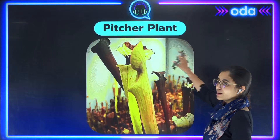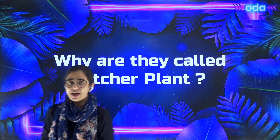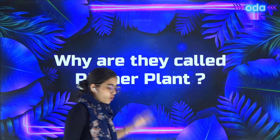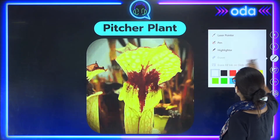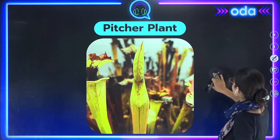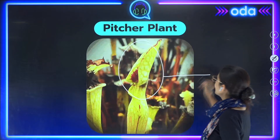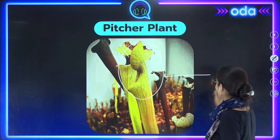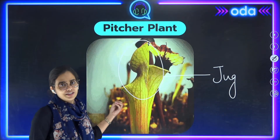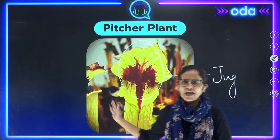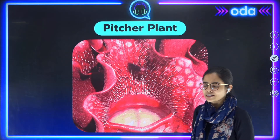So you can see that's the pitcher plant. Now, why are they called the pitcher plant? Any idea about it? They are called the pitcher plant because if you observe the shape of this plant — the pitcher, in very simple English, means a jug. So the shape of this pitcher plant resembles a jug, and that is the reason why they have got their name. It's very simple.